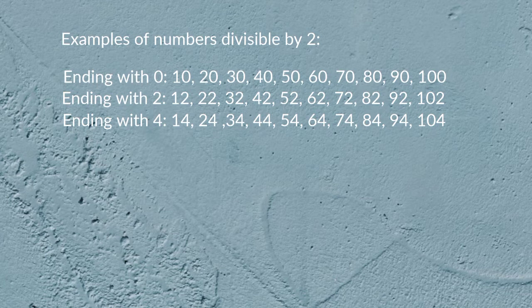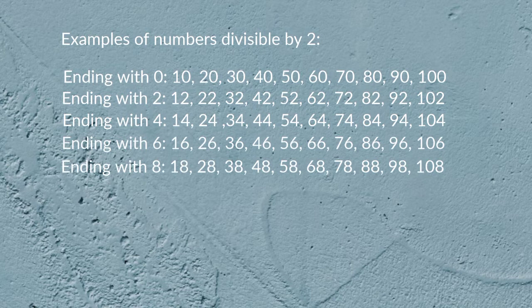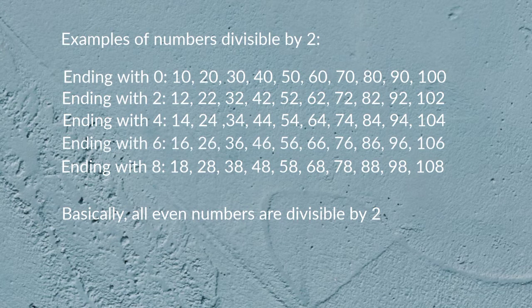Ending with 6 — 16, 26, 36, 46, 56, 66, 76, 86, 96, 106; ending with 8 — 18, 28, 38, 48, 58, 68, 78, 88, 98, 108. Basically, all even numbers are divisible by 2.